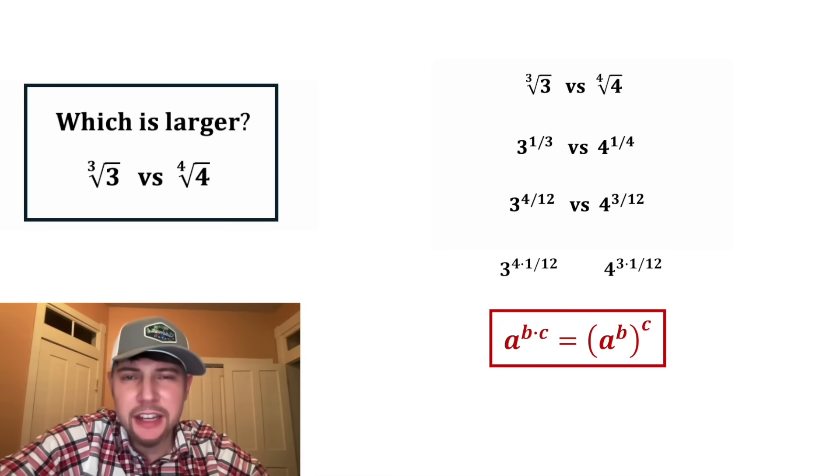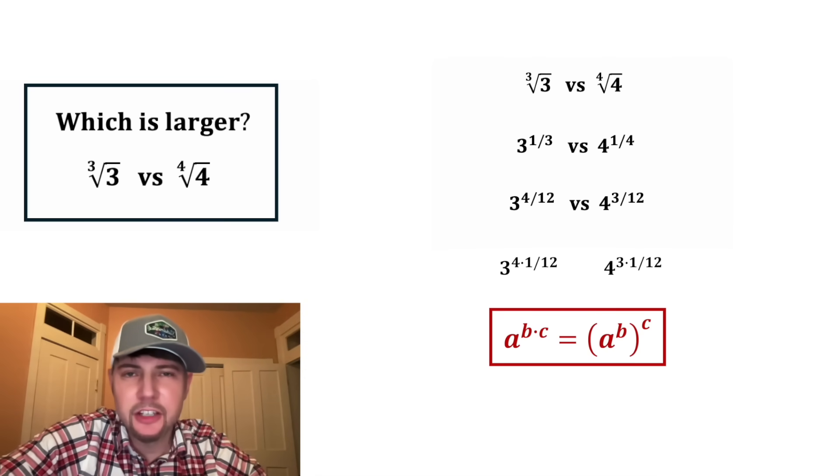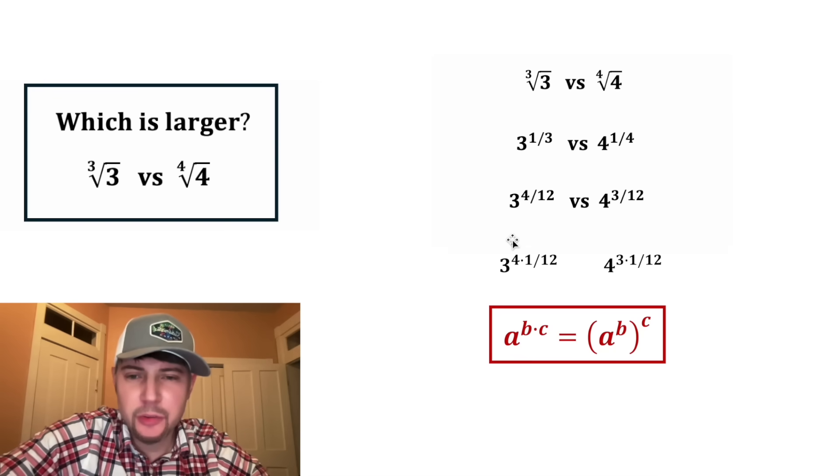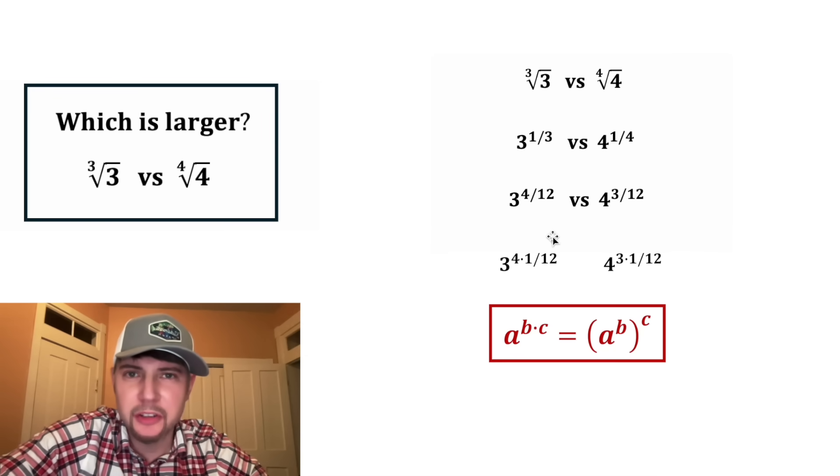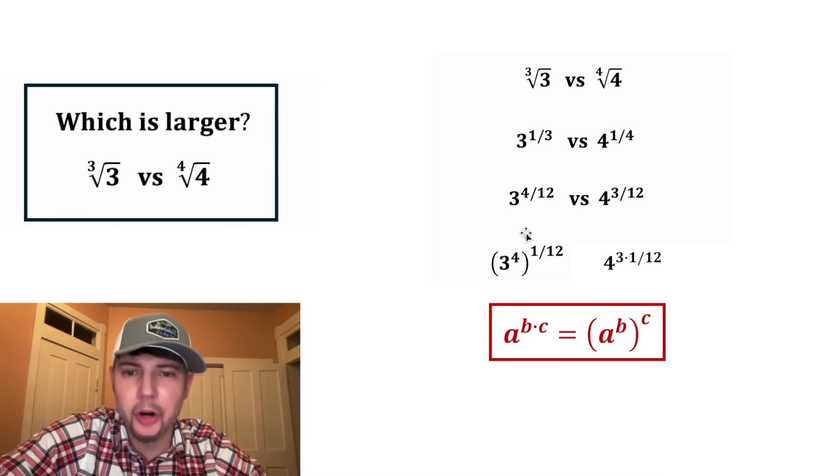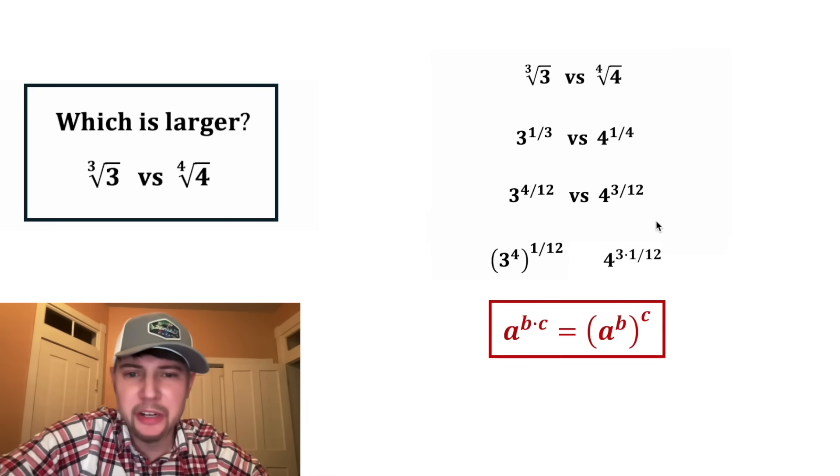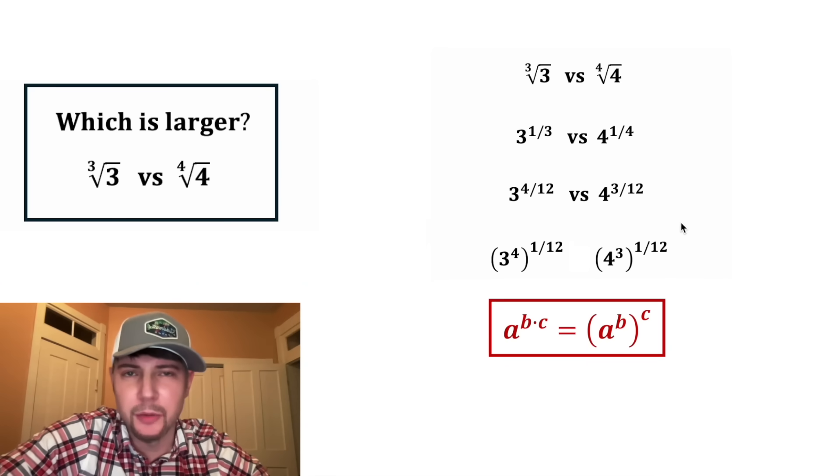And now using these notes, anytime you have a to the power of b times c, you can rewrite it as a to the b whole thing to the c. So this three to the four times 1 twelfth can be rewritten as three to the four whole thing to the 1 twelfth. And the 4 to the power of 3 times 1 twelfth can be rewritten as four to the 3 whole thing to the 1 twelfth.